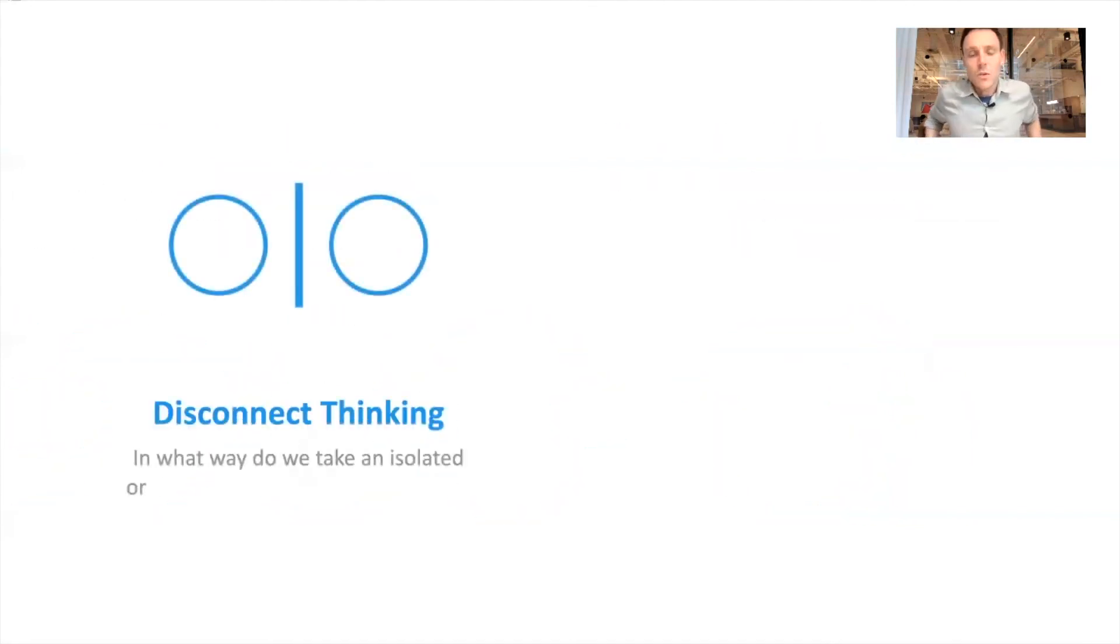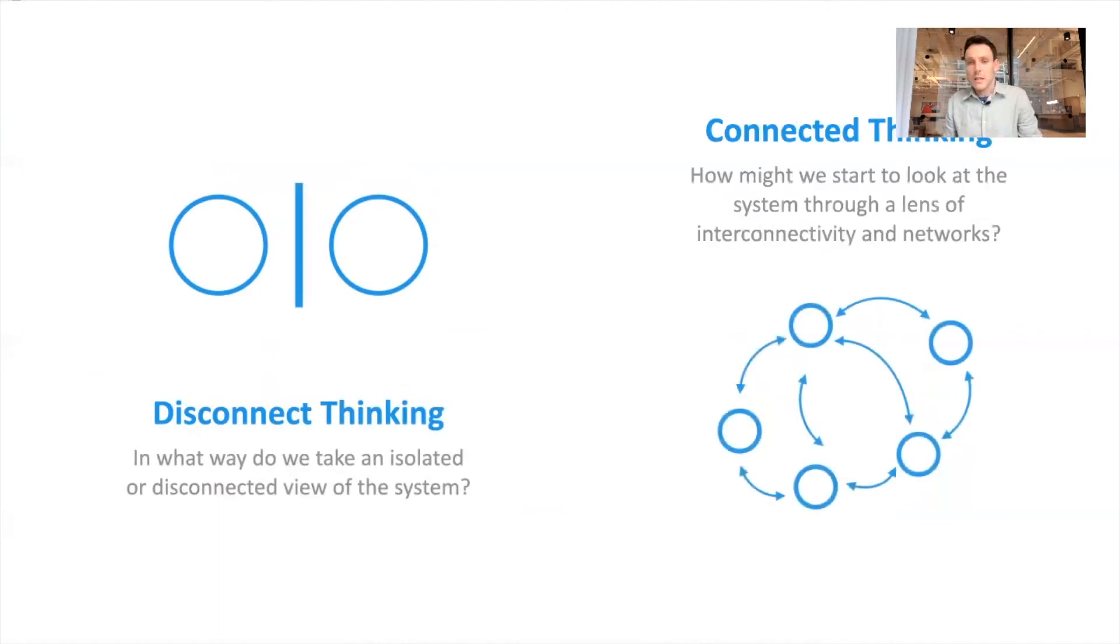So finally, talking about connected versus disconnected, we mentioned that systems thinking is a connected view of the world. So it's this kind of networked way of looking at the world, as opposed to the reductionist, where we're often seeing separations, dividing, or individual parts.